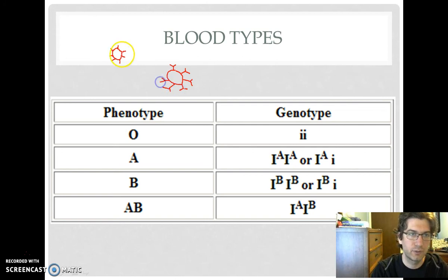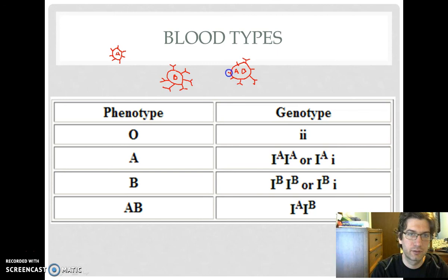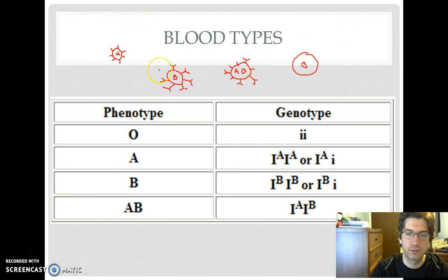As opposed to having straight lines, this would be like A antigens, and over here we have B antigens. If you have AB blood, then you would have both A and B antigens coming off of it. If you have O blood, you actually don't have any antigens on there, and that's one reason why O is kind of the rare blood type. That's simply how blood types work.